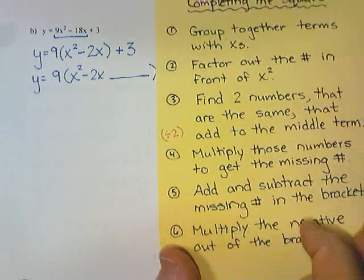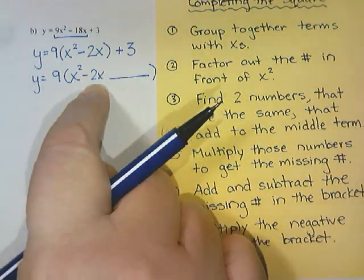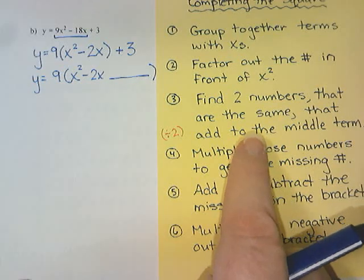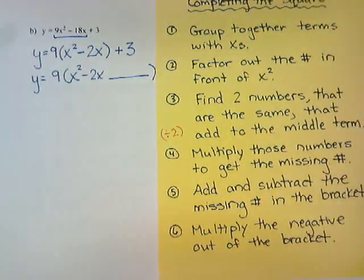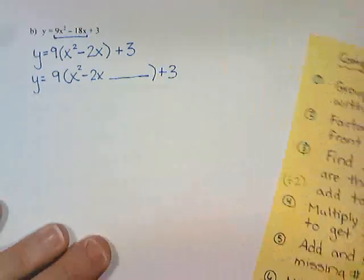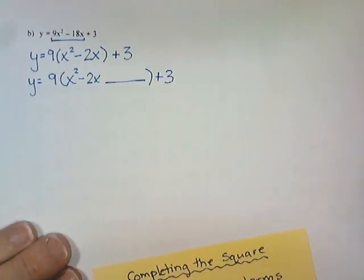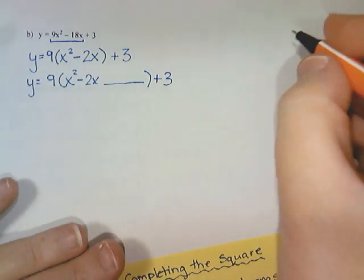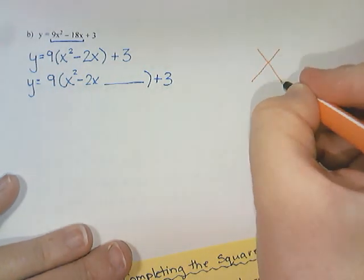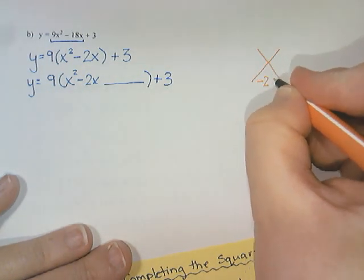I need to figure out those numbers. So the middle term is the 2x. So we're looking for two numbers that are exactly the same that add to -2x. So over here at the side we are going to look for two numbers that add to give me -2x.